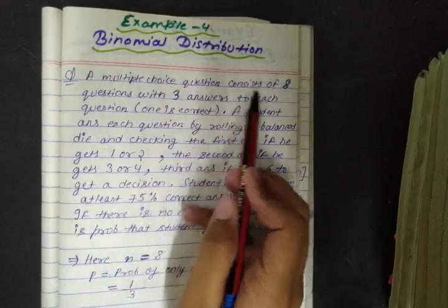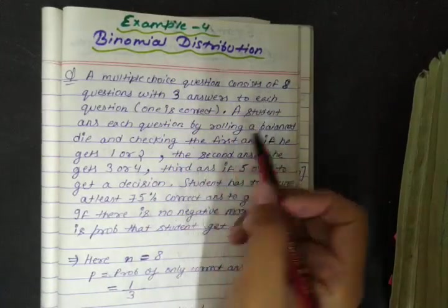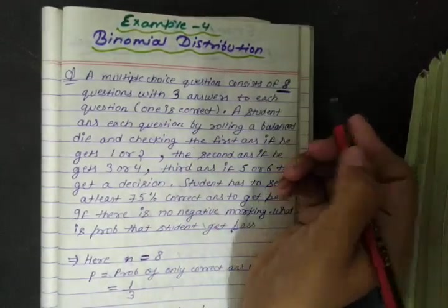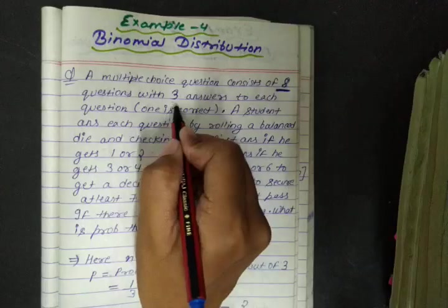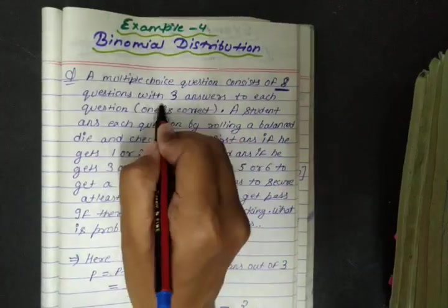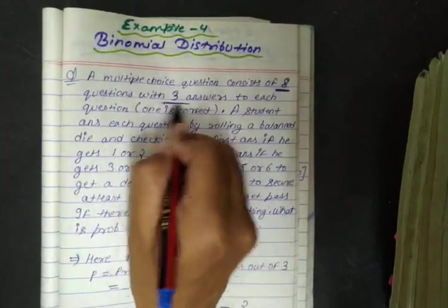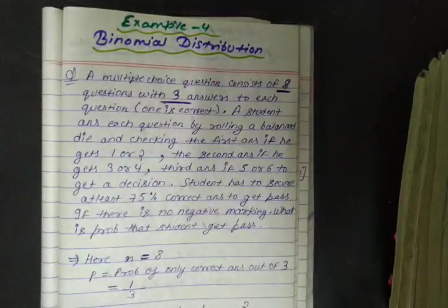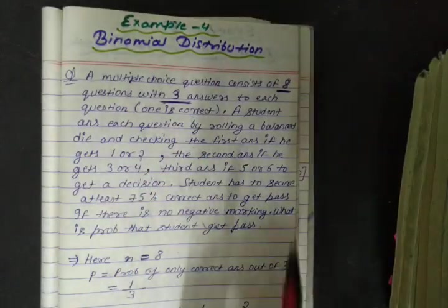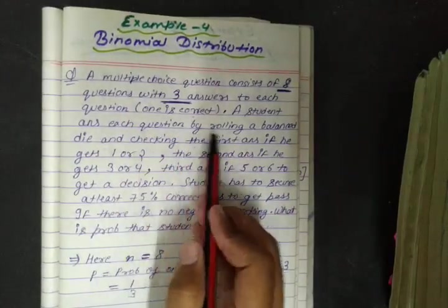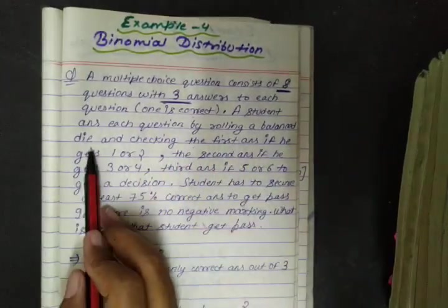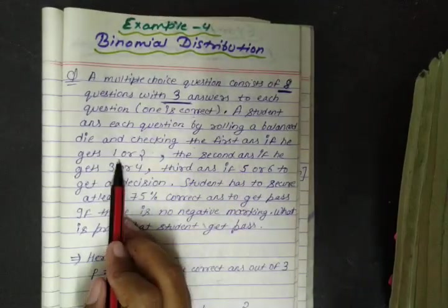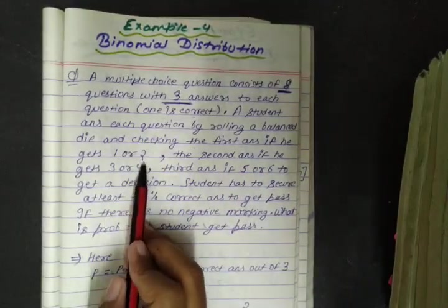A multiple choice question test consists of 8 questions, each having 3 answers, out of which only one is correct. A student answers each question by rolling a balanced die and checking the first answer if he gets 1 or 2.